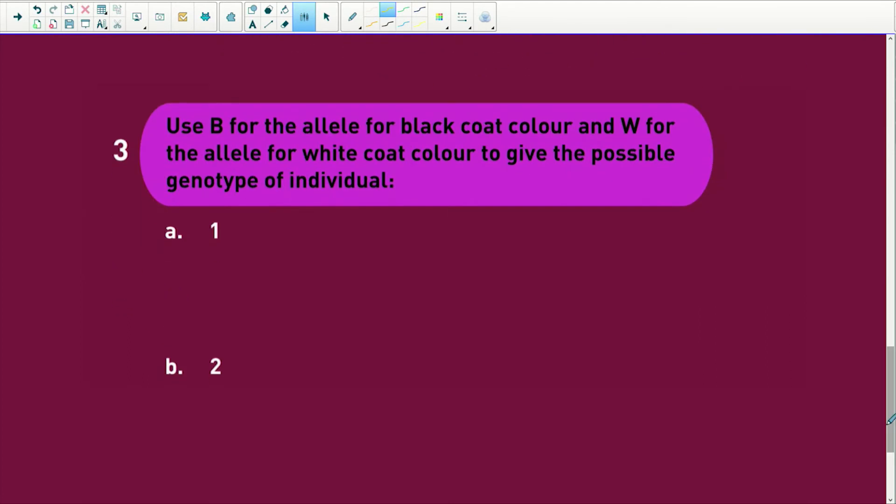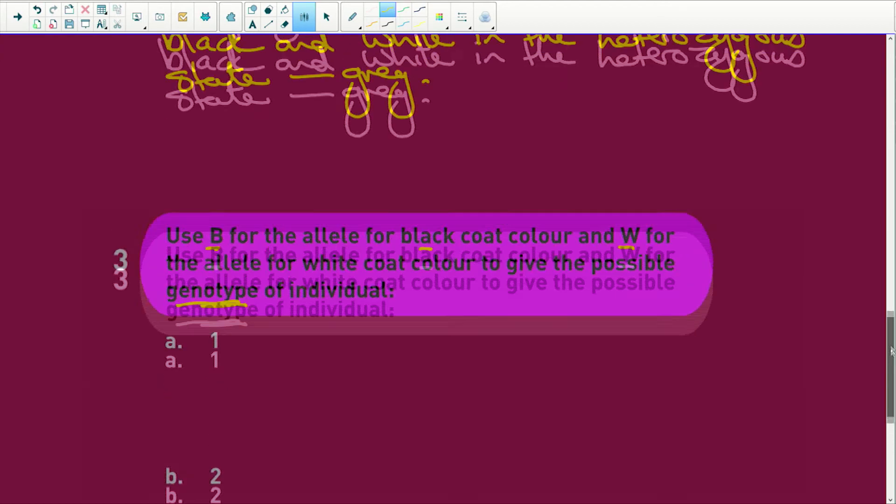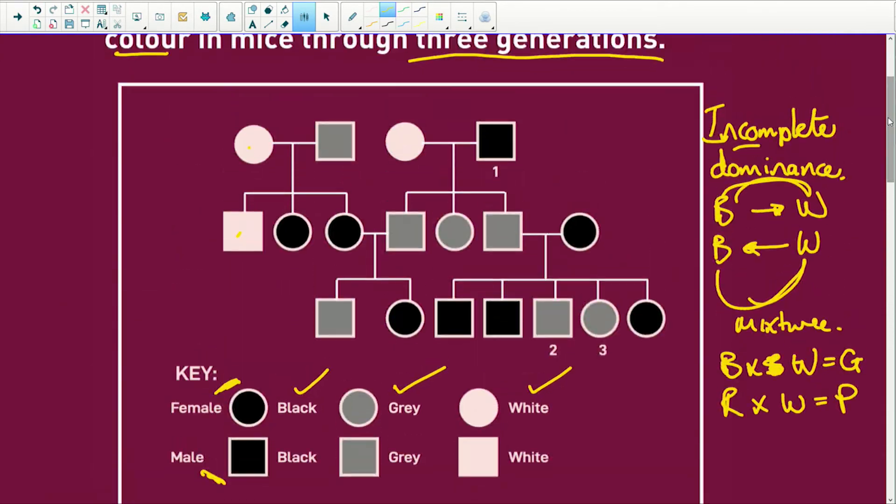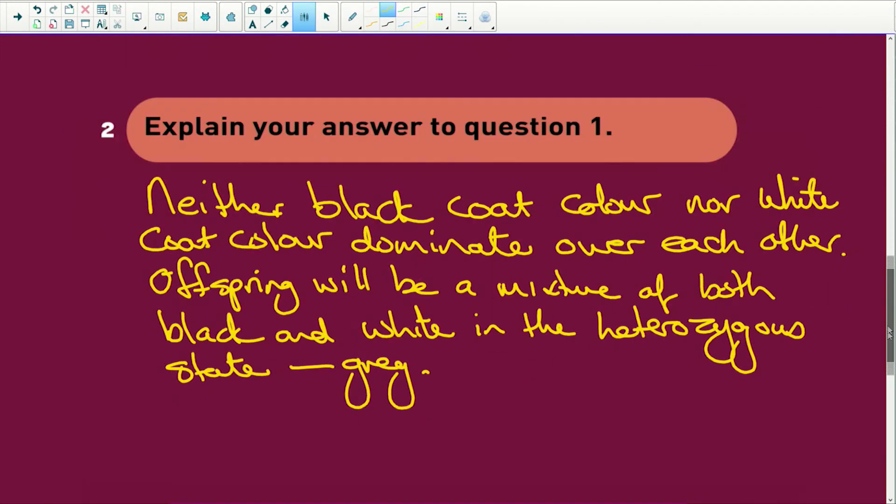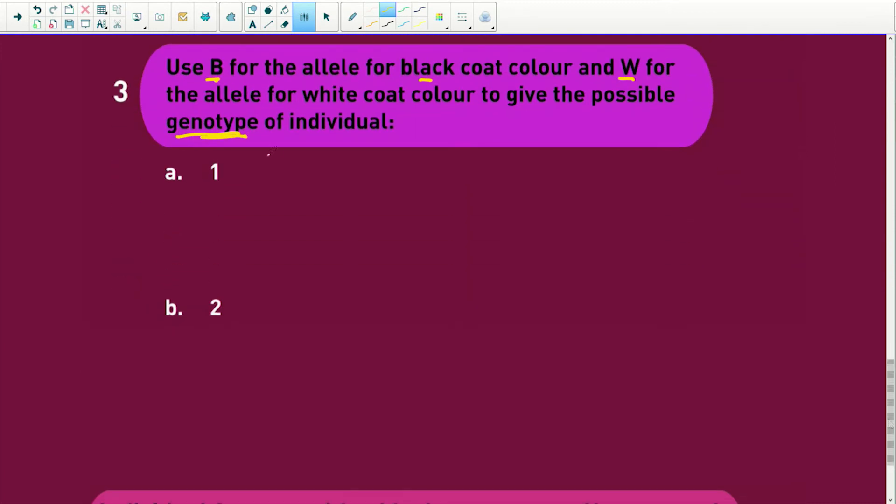Then, use B for allele for black coat, W for white coat, and the allele for white coat colour to give the possible genotypes of the individual one and two. So let's check individual one and two. Individual one, oh, is black because it's black. And two is grey. Okay. So therefore, it's going to be capital B, capital white. So this is BB and this is BW. Okay.